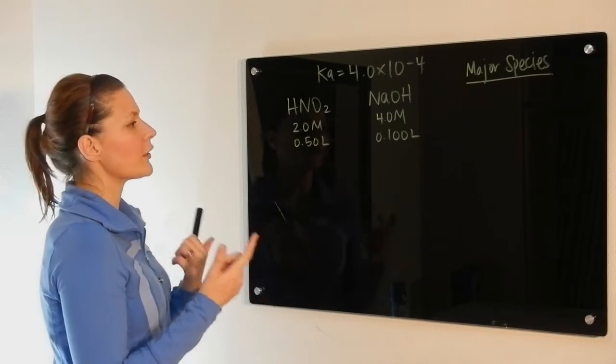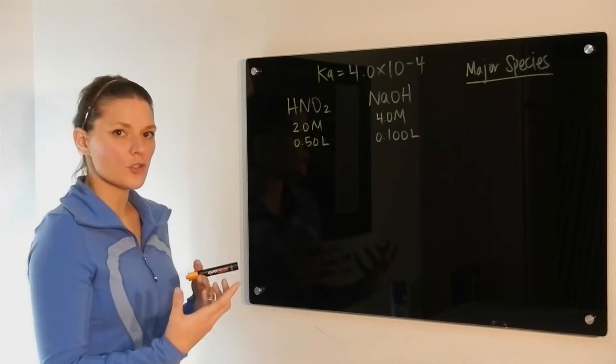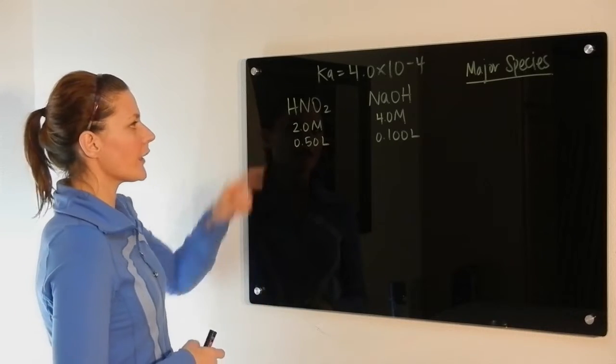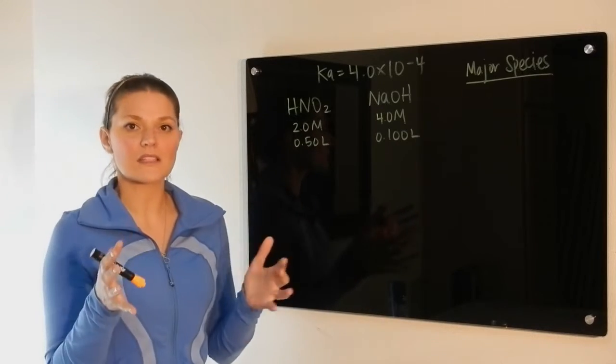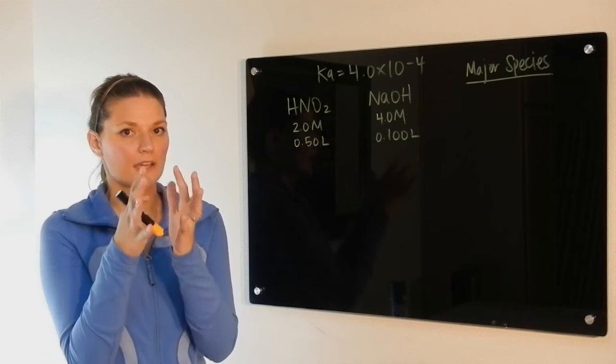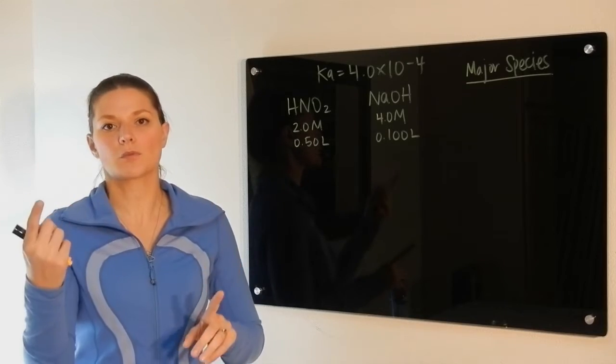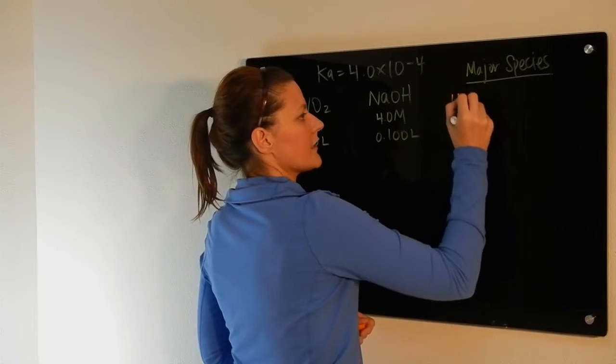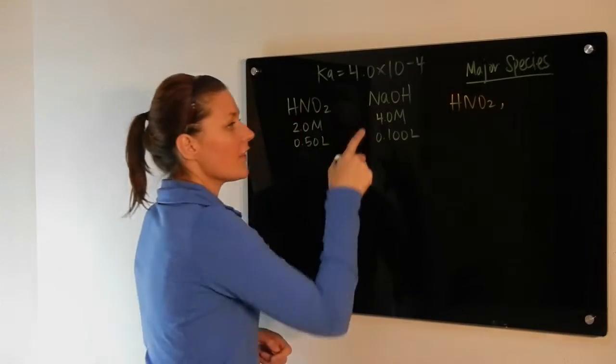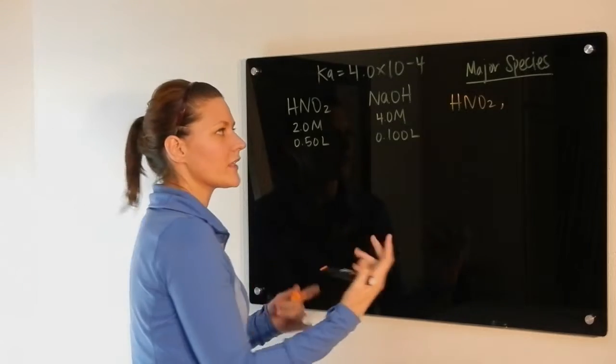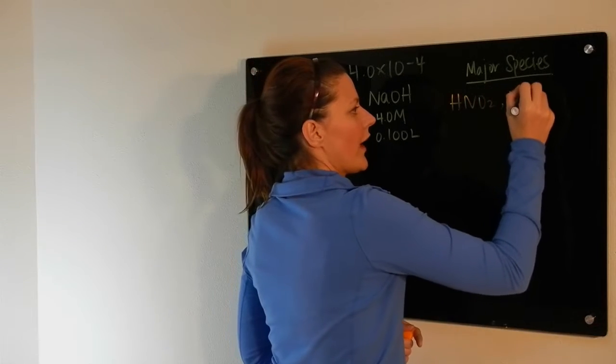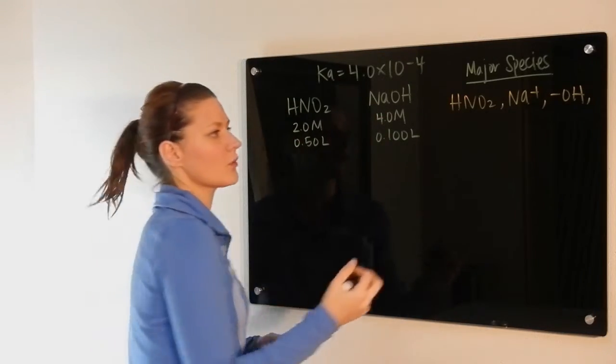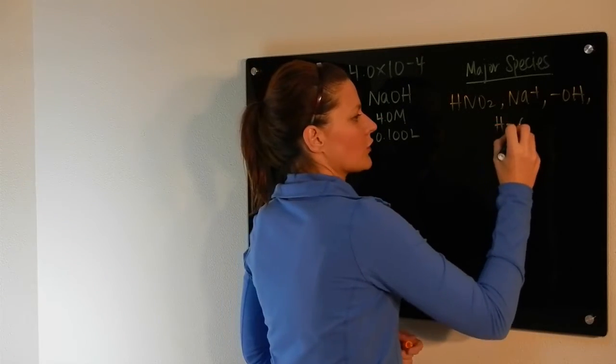So what we're going to do is look at our major species. Major species means it's what is primarily in the solution. If we look at our weak acid here, it is mostly stuck together. So it's mostly nitrous acid, it's not mostly H-plus and nitrite separate from each other. So from this, our contribution is HNO2. This is a strong base, meaning it's going to fully dissociate. So we have Na-plus and hydroxide. And because we're always talking about aqueous solutions, water is also a major species.